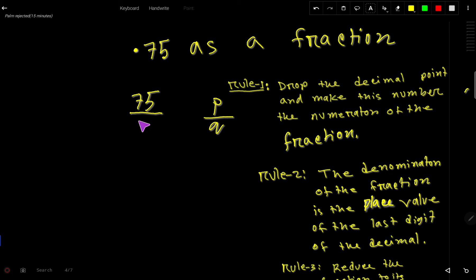The denominator of the fraction is the place value of the last digit of the decimal. This is the 10th place and this is the 100th place, so we have to write here 100.